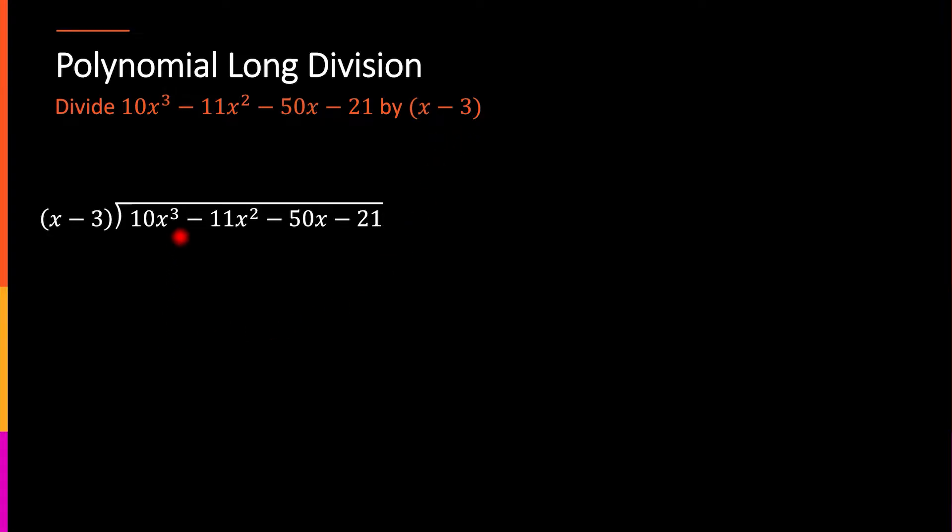So, just like before, I have the polynomial inside the division, and I have the thing I'm divided by outside. So, I have the dividend and the divisor.